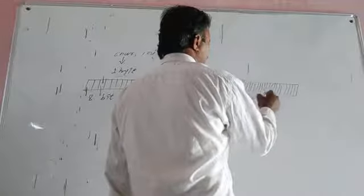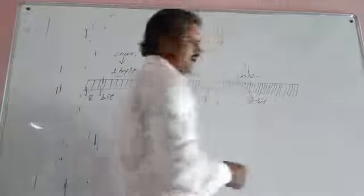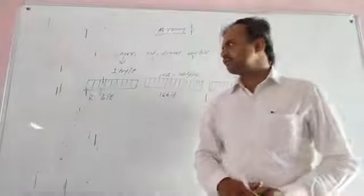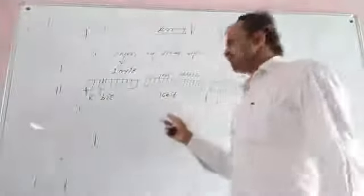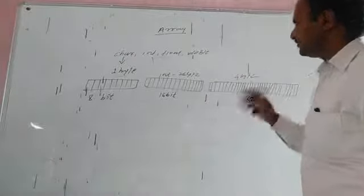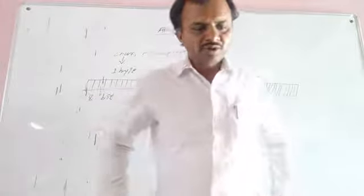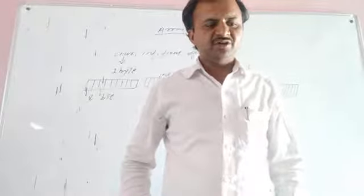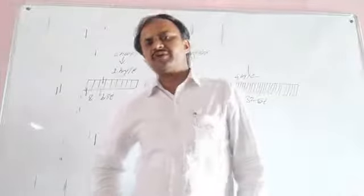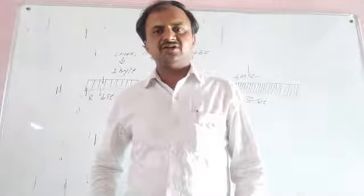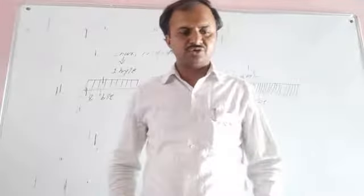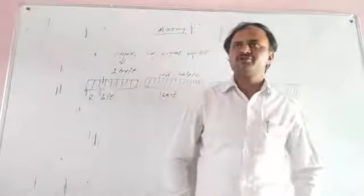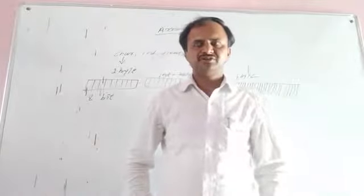So, to summarize memory allocation: character is 1 byte, integer is 2 bytes (16 bits), float is 4 bytes, and double is 8 bytes (64 bits). When we need to handle a large amount of data and require a more powerful data type, C supports a derived data type known as array, which is used to store large data values.